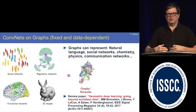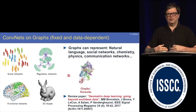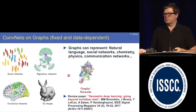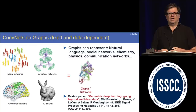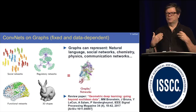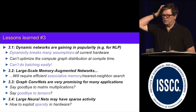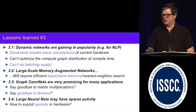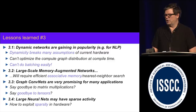Third category: graph convolutional nets, or graph neural nets — a new type spawning a new subfield where the input to a neural net is not a tensor or multidimensional array, but a function on a graph. The graph can change structure at every new data point, so the neural net is again dynamic. This is very popular for analyzing social networks, chemistry — understanding how to go from one molecule to another, figuring out where two molecules will stick together. Lessons learned: dynamic networks are gaining popularity particularly for NLP; large-scale memory-augmented networks will require efficient associative memory and nearest-neighbor engines; graph conv nets are very promising for many applications; and we may have to say goodbye to matrix multiplication and tensors as the elementary operation.